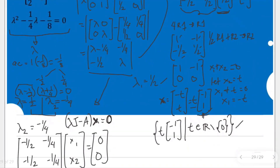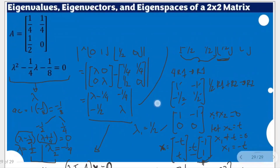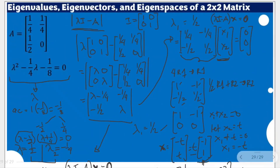This is how we show the eigenvalues, eigenvectors, and eigenspaces of any 2x2 matrix. It is very important to first obtain the correct characteristic equation — please review the previous video explaining that. Thank you very much for watching.